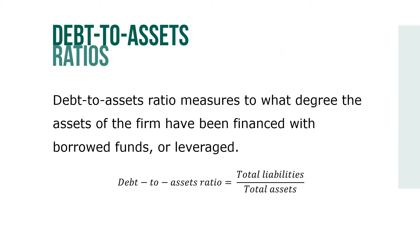Debt-to-asset ratio measures to what degree the assets of the firm have been financed with borrowed funds, or leveraged. This ratio identifies the claim on assets by the creditor. It is commonly expressed as a percent, where debt-to-assets ratio equals total liabilities over total assets.